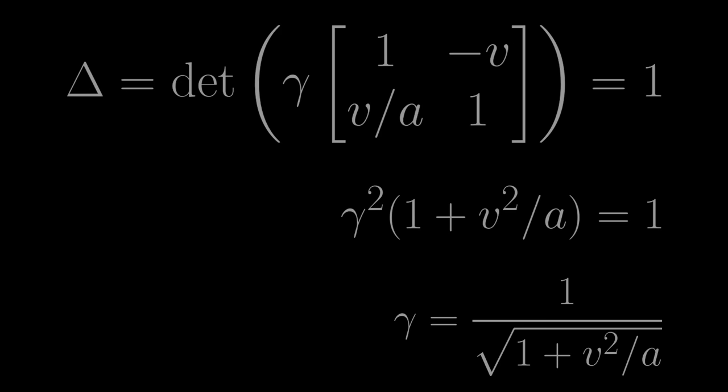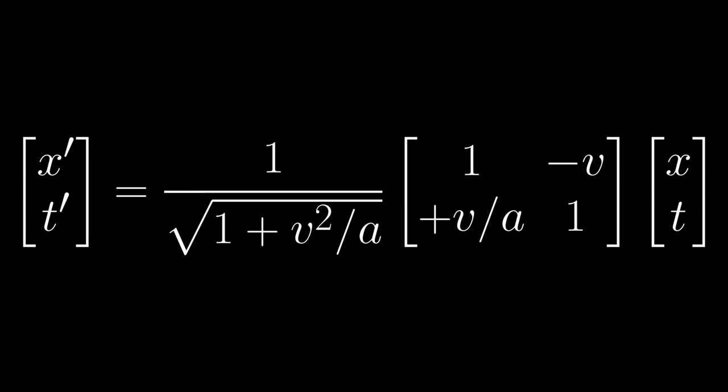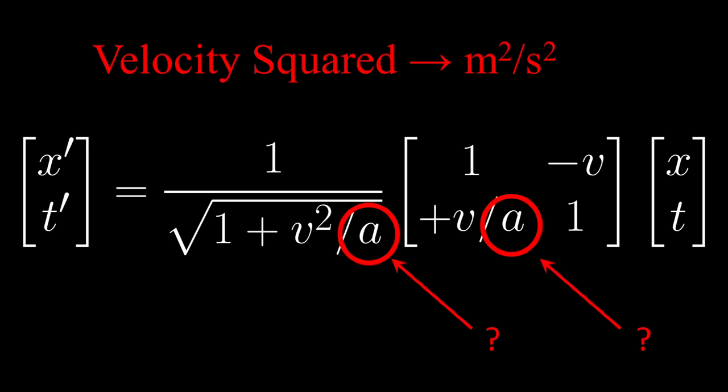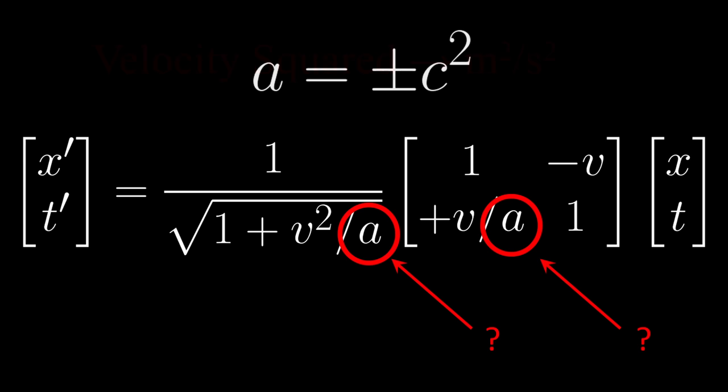Clearly, the only parameter we have left to make sense out of is that little mysterious constant A. So let's take a moment to think about what exactly that thing represents. For starters, the astute observer might notice that A just so happens to have units of velocity squared. That's a little odd, but it does motivate us to rewrite A in terms of a new velocity constant, which we'll call C, such that A is equal to plus or minus C squared. What exactly this magical velocity represents, we cannot yet say. But clearly, there are only three possible scenarios to consider.